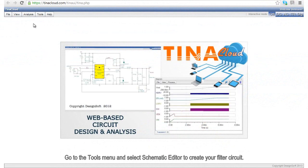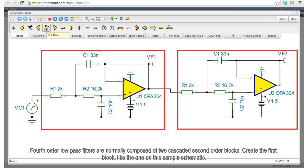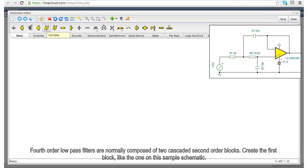Go to the Tools menu and select Schematic Editor to create your filter circuit. Fourth-order low-pass filters are normally composed of two cascaded second-order blocks. Create the first block like the one on this sample schematic.